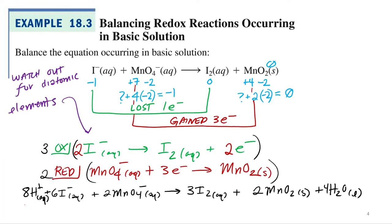So let's write that. For basic conditions, what is it, step seven? Okay. We're going to add OH⁻ to both sides to neutralize the H⁺ ions. Okay. So in acidic conditions, we can have excess H⁺. Basic conditions, we can't. So we're going to have excess hydroxide.